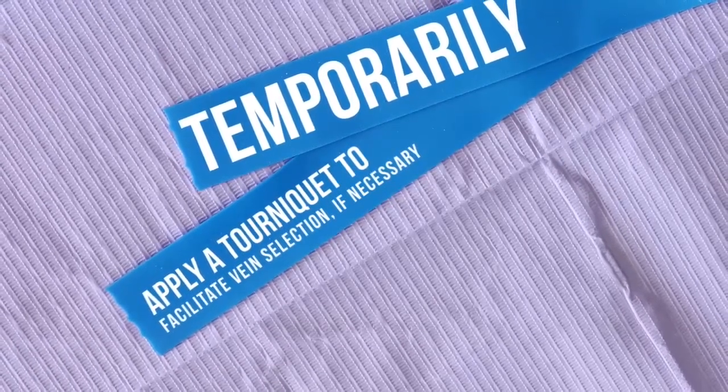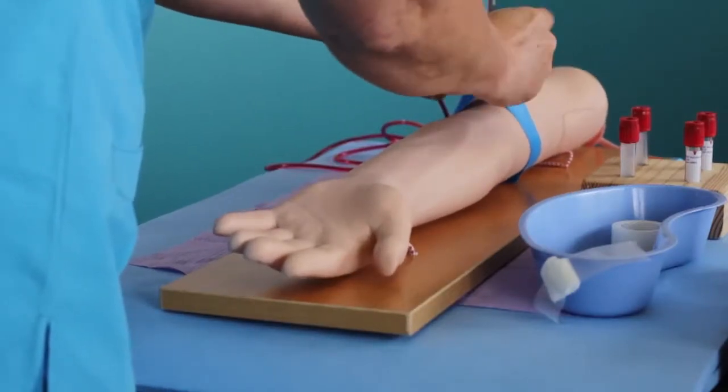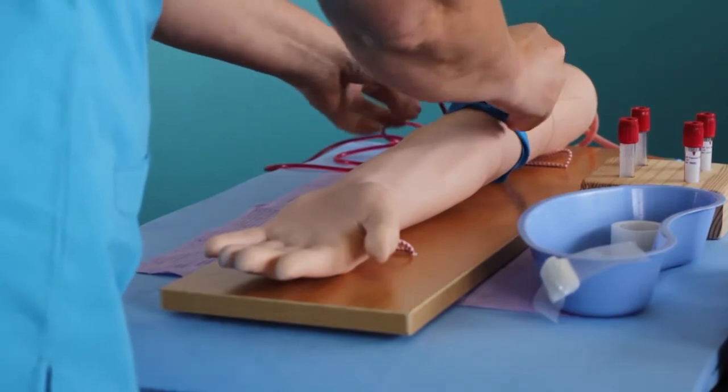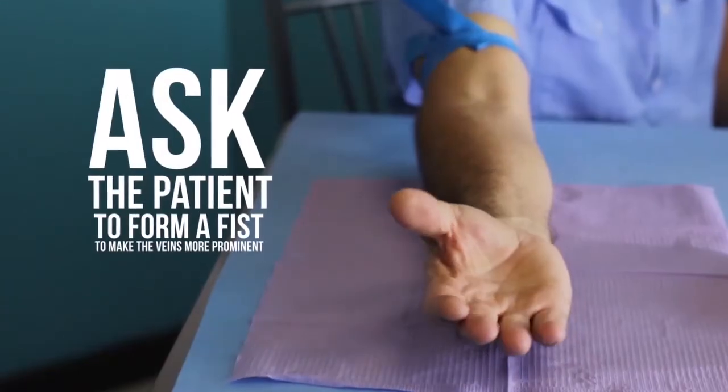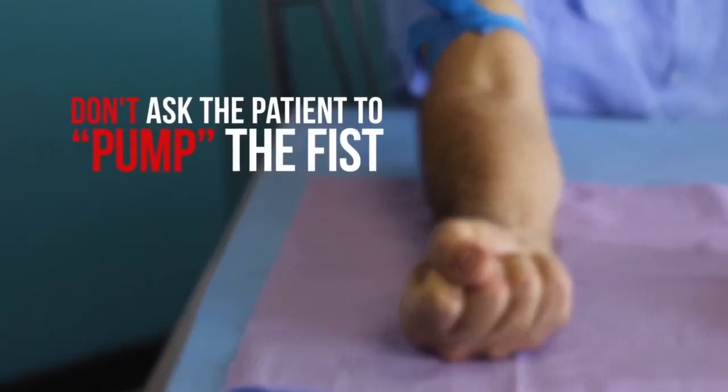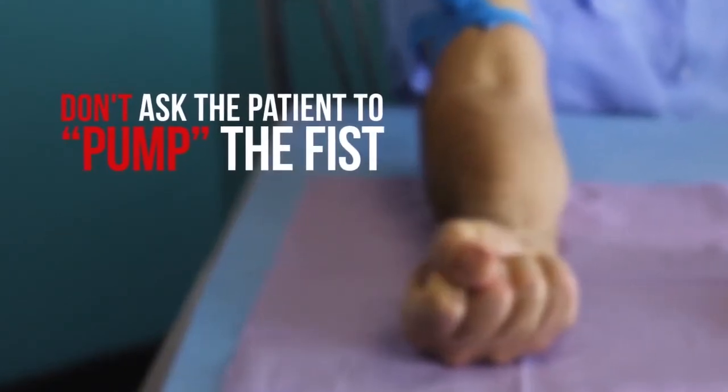When ready to draw the blood, apply the tourniquet about four to five finger widths above the selected venipuncture site. Ask the patient to form a fist to make the veins more prominent. Don't ask the patient to pump the fist.